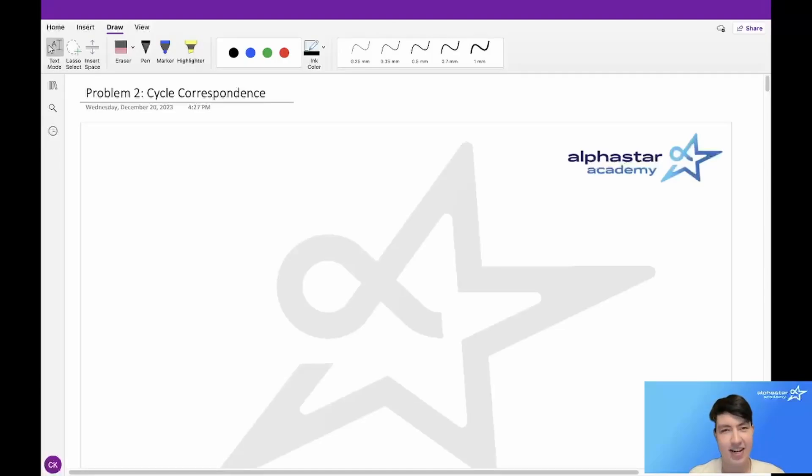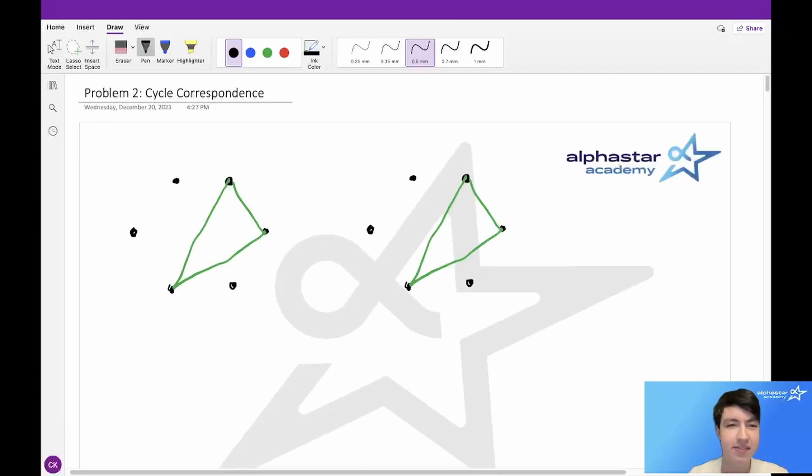Hello everyone, I'm Connor Kennedy, and today I'll be presenting to you the solution to the USACO December 2023 Silver Contest Problem 2: Cycle Correspondence. In this problem, we are given that there are n barns.